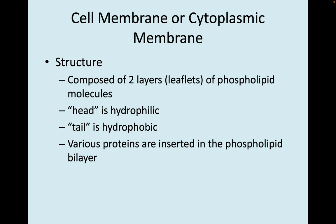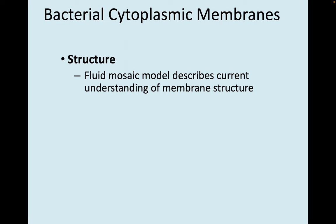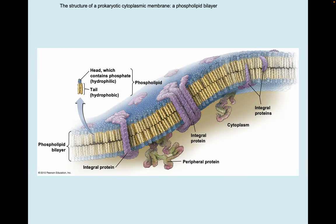There are also various proteins inserted into this phospholipid bilayer. The fluid mosaic model describes our current understanding of membrane structure. You see all those blue hydrophilic heads and the yellow hydrophobic tails on those phospholipid molecules, and how they've oriented themselves so all the tails face inside together, away from the water. You also see integral proteins — some are anchored on one side of the membrane or the other, but some proteins cross both layers of the membrane.